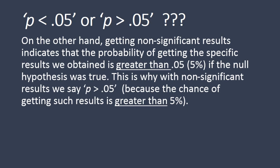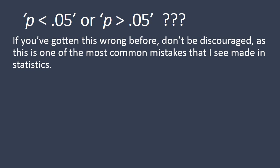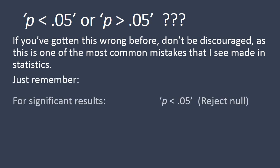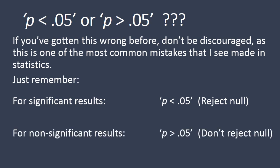This is why with non-significant results we say P is greater than 0.05, because the chance of getting such results is greater than 5%. If you've gotten this wrong or been confused about this before, don't be discouraged, as this is one of the most common mistakes I see made in statistics. A lot of people get it backwards. So just try to remember: for significant results, you want to state P is less than 0.05, and for non-significant results, you state P is greater than 0.05.